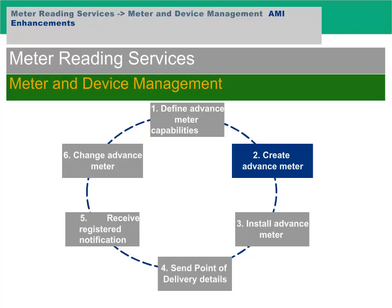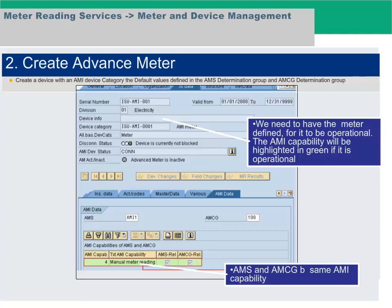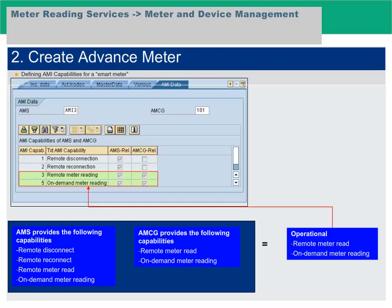This slide shows the next step of creating an advanced meter. We need to have the meter defined for it to be operational. The AMI capability will be highlighted in green if it is operational. Create a device with AMI device category using the default values defined in the AMS determination group and AMCG determination group. AMS provides the following capabilities: remote disconnect, remote reconnect, remote meter read, and on-demand meter reading. AMCG provides the following capabilities: remote meter read and on-demand meter reading. The operational capabilities include remote meter read and on-demand meter reading.